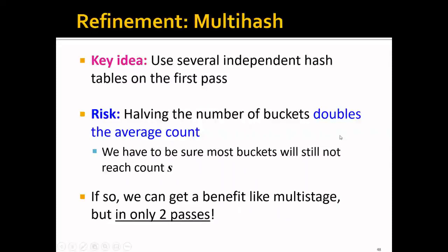The risk of using two hash tables is that the number of buckets for each hash table is cut in half, which means in expectation we are doubling the average count of each bucket. We have to be sure that most buckets will still not reach the support threshold S; otherwise most buckets become useless and we won't be able to eliminate any candidate pairs. If we can be sure of that, we can get a benefit similar to multi-stage but in only two passes.